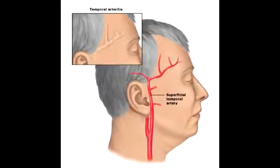What can temporal arteritis, also known as Horton's disease, commonly lead to? Temporal arteritis most commonly leads to ipsilateral blindness due to thrombosis of the ophthalmic artery, as well as polymyalgia rheumatica.